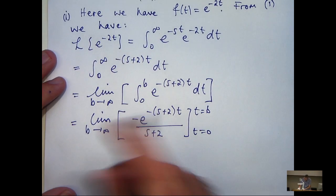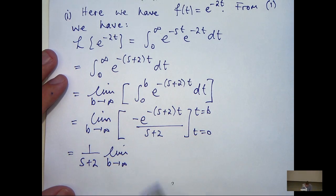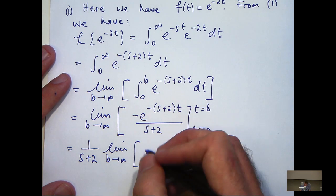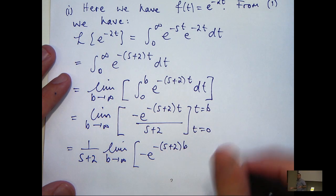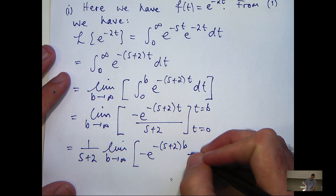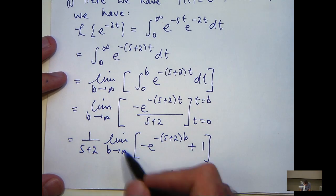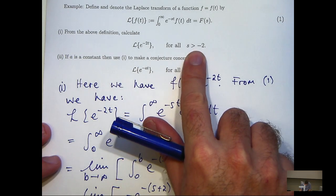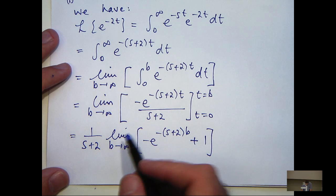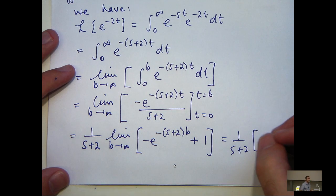Now, if I substitute in t equals b, then I'll get the following. And if I substitute in t equals 0, well, I'll get 0 up here and a minus and a minus gives it plus 1. So, now what I would like to do is actually evaluate this limit. Now, because s is strictly greater than minus 2, everything up here must be negative as b gets large and positive. So, the limit of this first term is actually going to go to 0. And, of course, the limit of the second term is just 1.